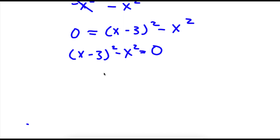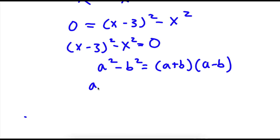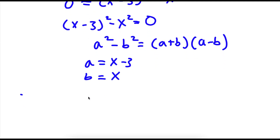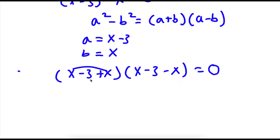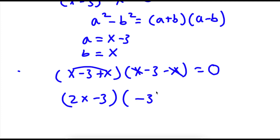Now if I have something in the form a squared minus b squared, this equals a plus b times a minus b. In this case a equals x minus 3 and b equals x. So x minus 3 squared minus x squared equals x minus 3 plus x, times x minus 3 minus x. Now x minus 3 plus x is 2x minus 3, and x minus 3 minus x simplifies to just negative 3. So I have 2x minus 3 times negative 3 is equal to 0.